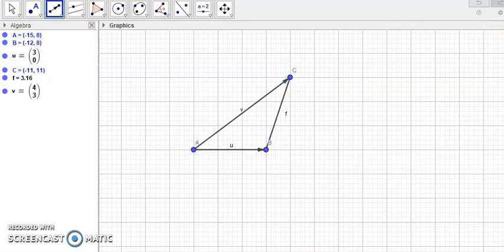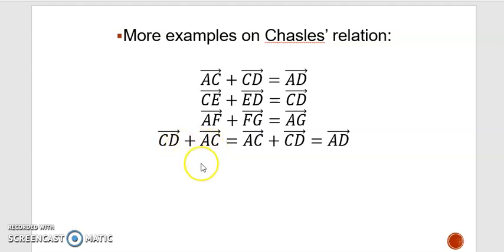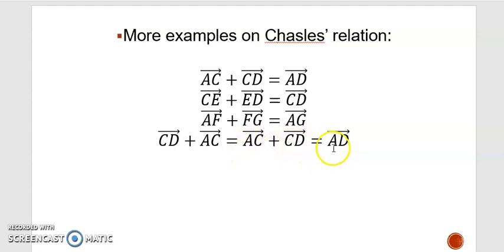If you're not asked to draw diagrams you can apply Chasles directly: AC plus CD — extremity matches origin — gives AD. CE plus ED gives CD. AF plus FG gives AG. For CD plus AC, you might not immediately see Chasles because the extremity is D and origin is A. However, the origin of CD is C and the extremity of AC is also C, so rearrange as AC plus CD — now the extremity C matches the origin C — and you get AD using Chasles.